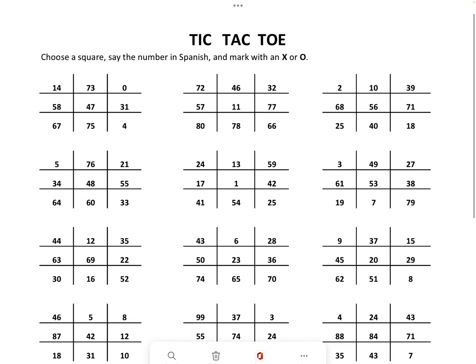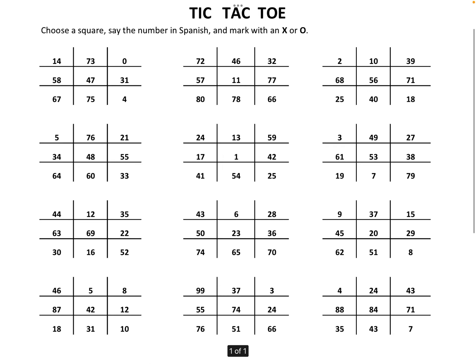You'll get a sheet like this. So you and a partner, you're going to say the number in Spanish and mark with an X and an O. So I can use the first board up in the top left. If I want to put an X under 14, I would say to my partner, catorce, and I'd put an X there.